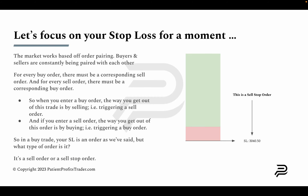Let's focus on your stop loss. The market works based on order pairing — buyers and sellers are constantly being paired with each other. For every buy order, there must be a corresponding sell order, and for every sell order, there must be a corresponding buy order. Just like at a market: you can only buy if someone is selling, and you can only sell if someone is willing to buy. Your take profit is an order, and your stop loss is also an order.